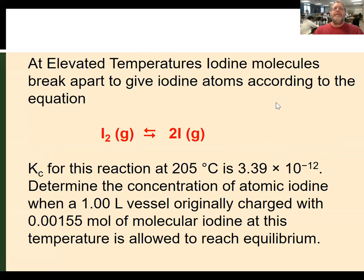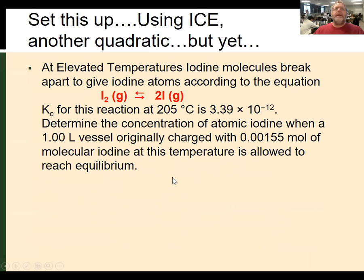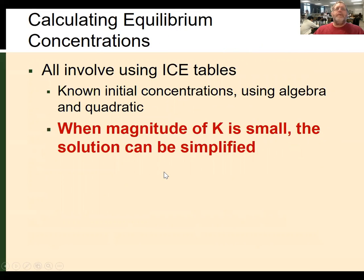Here's another example. At elevated temperatures, iodine molecules break apart to give iodine atoms according to the equation shown. Kc for this reaction is 3.39 × 10⁻¹². This is a really small number. If a one-liter vessel contains 0.00155 moles of iodine, what are the equilibrium concentrations? We'll set this up using an ICE table. Even though it looks like another quadratic, K times 100 is going to be significantly less than our concentration, so when K is small, the solution can often be simplified.